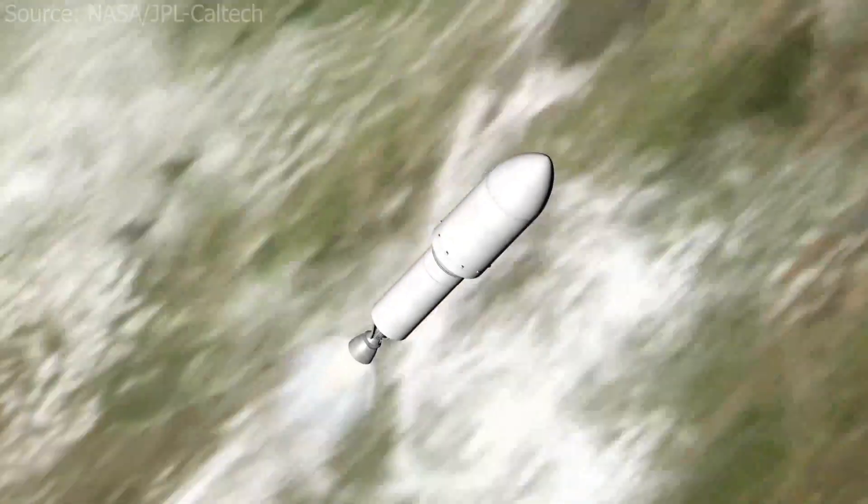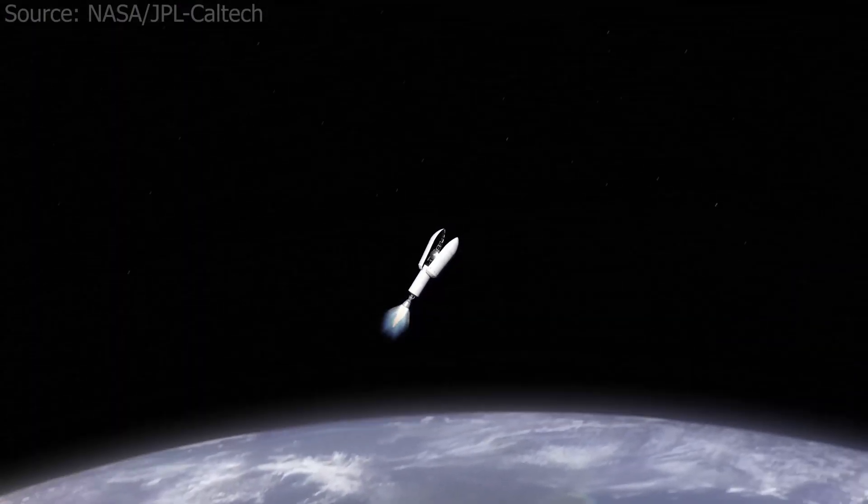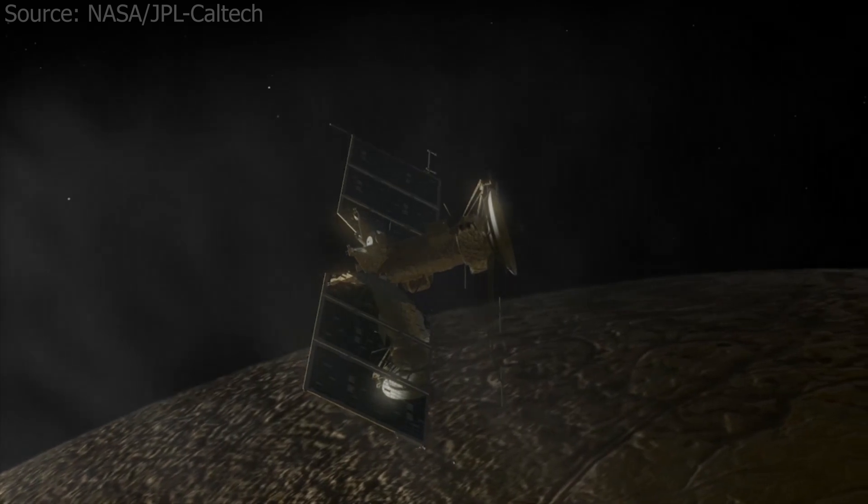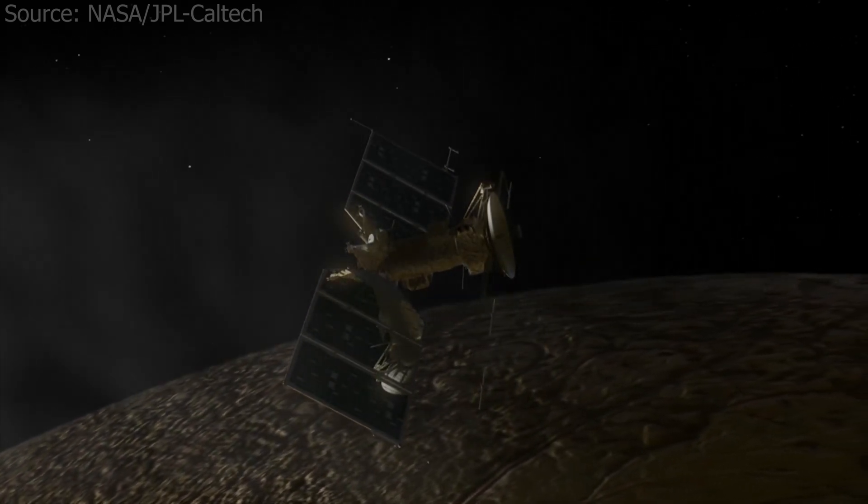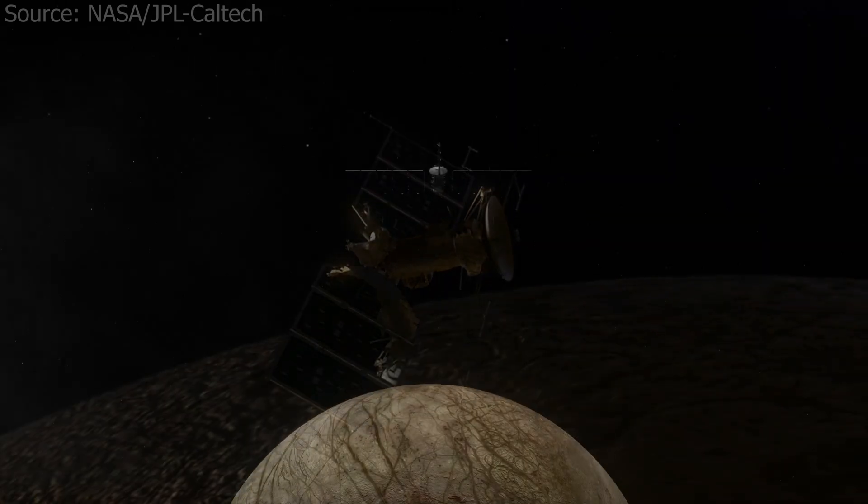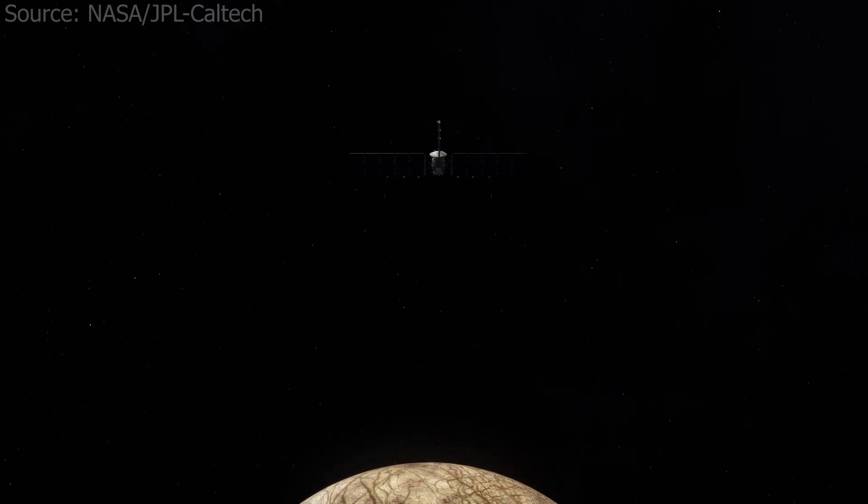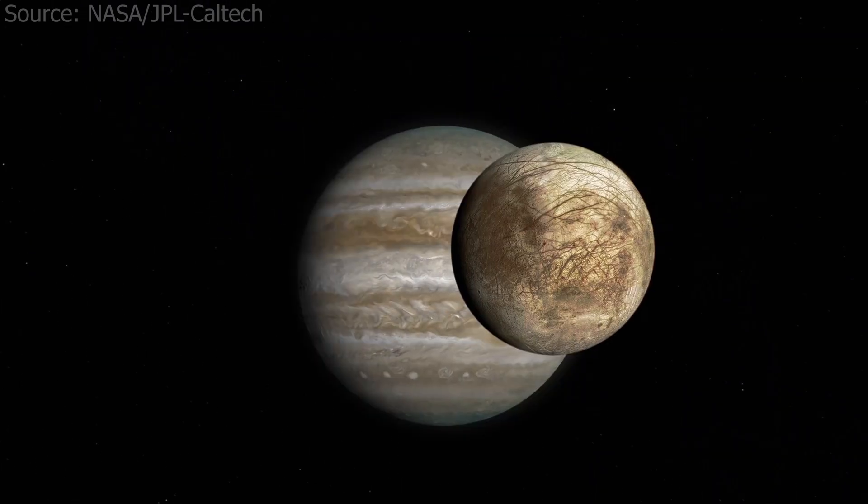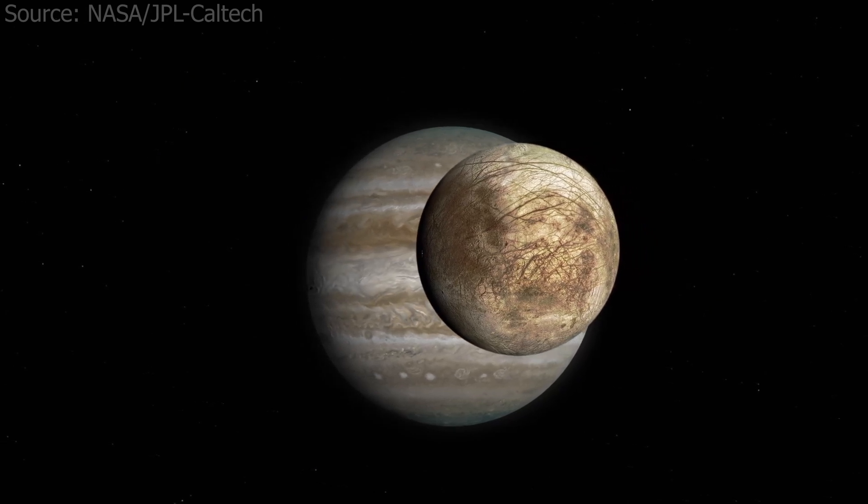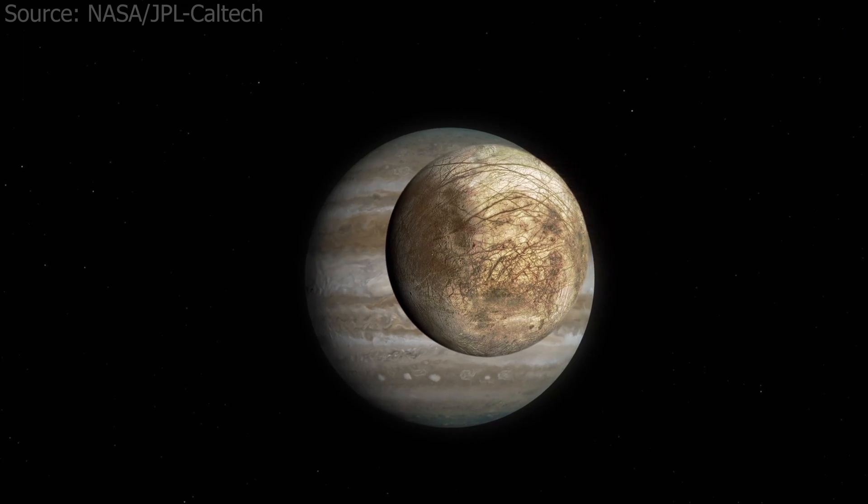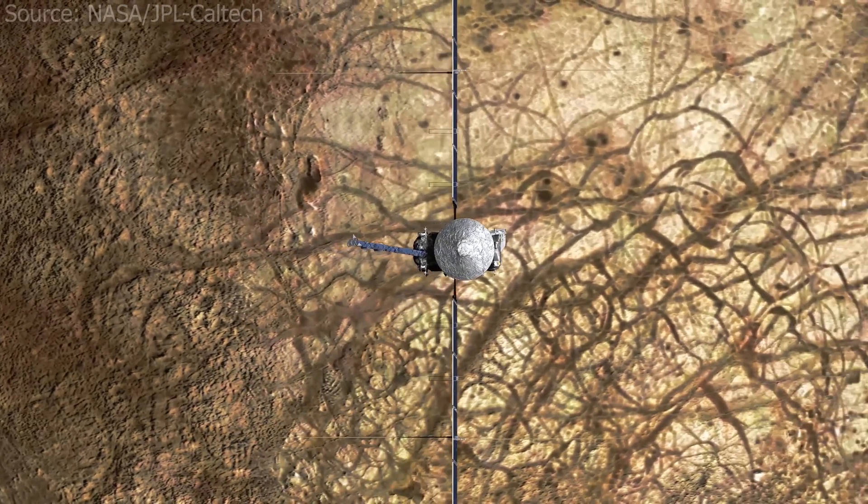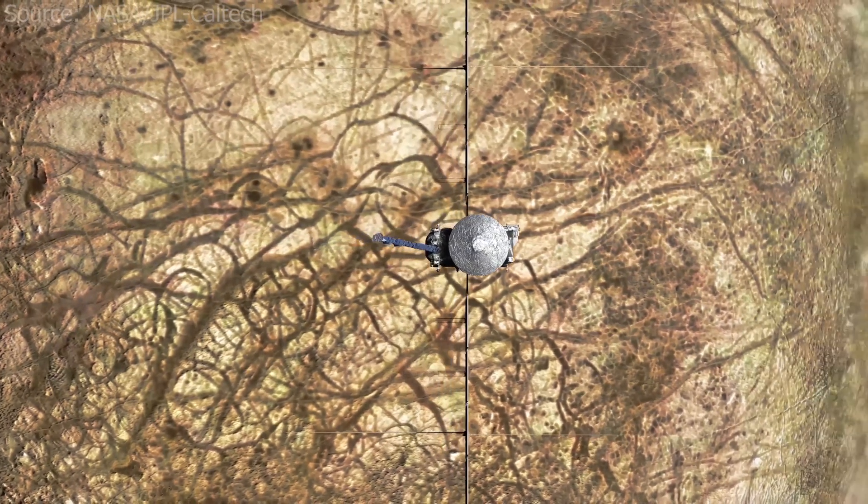Set to launch in 2024, Europa Clipper will study the moon's atmosphere, surface and interior with its main science goal being to determine whether there are places below Europa's surface that could support life. The probe will swing past the moon dozens of times, sometimes coasting just 16 miles above the surface. Each pass will bring scientists closer to understanding the workings of this celestial body and its mysterious interior. Beneath that frosty coating could be the answer to one of our biggest questions: is there life anywhere else in the universe?